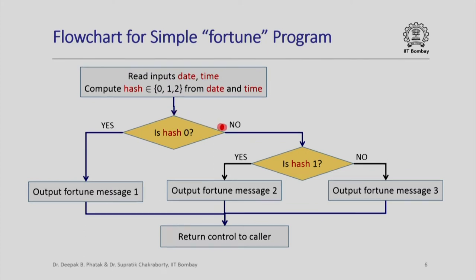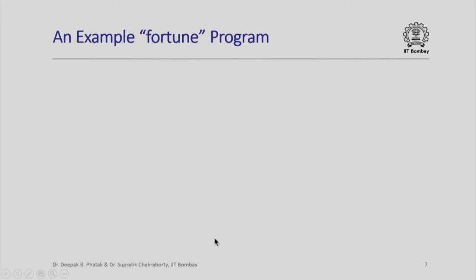Here is a simple animation of what might happen if the value of hash is 1. The red circle denoting the flow of control comes down, goes to the case for hash equal to 1, prints Fortune message 2, and then returns control back to the caller.